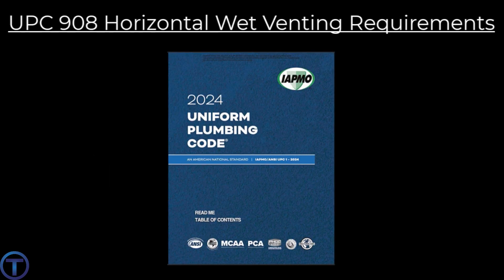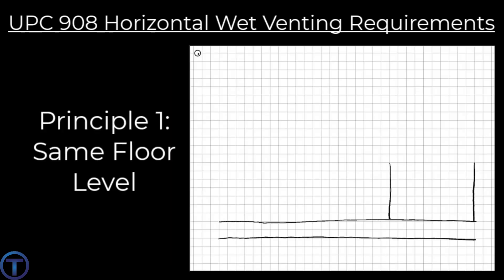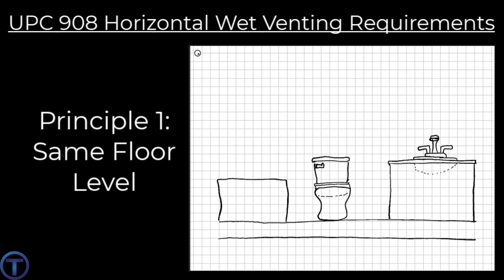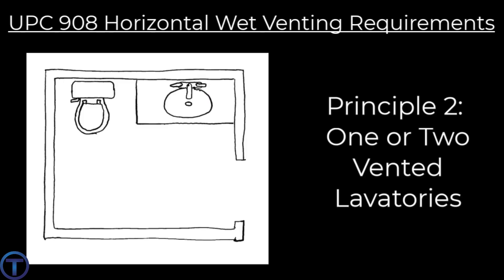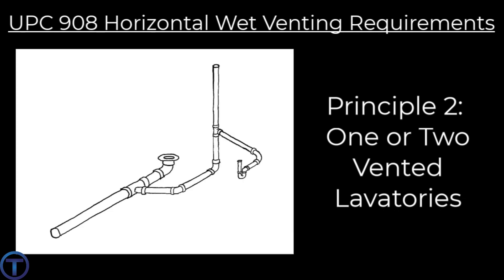Now let's go over to the Uniform Plumbing Code and look at what they have for wet venting — section 908. Horizontal wet vent principle one: all wet vented fixtures must be on the same floor level. Horizontal wet vent principle two: the wet vent is to be vented by one or two vented lavatories, so we're focusing on using a lavatory to wet vent.